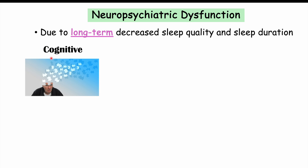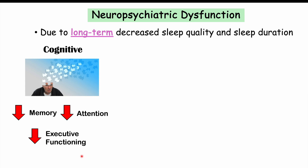Cognitive dysfunction includes decreased memory — patients can have decreased short-term memory, impaired working memory, or issues with recall from long-term memory. There is also decreased attention, so patients are not able to focus as well as they should be, and decreased executive functioning — decreased ability to plan and arrange tasks that need to be done in a prioritized fashion.